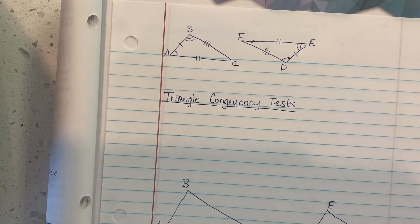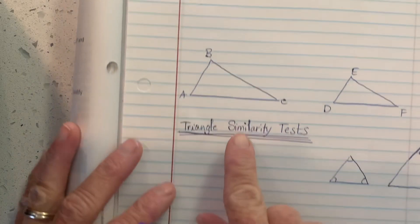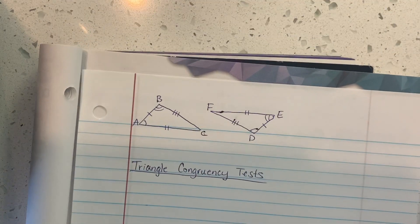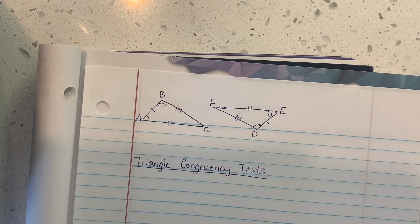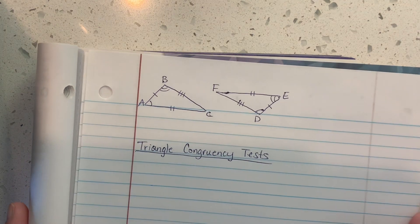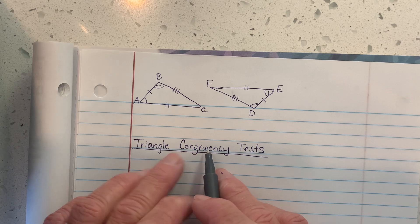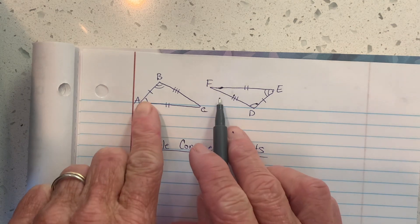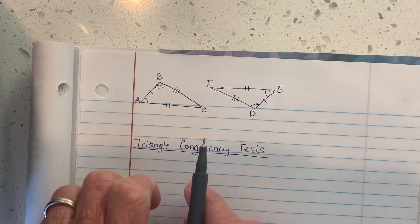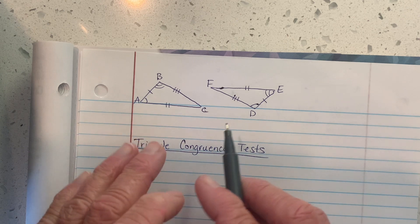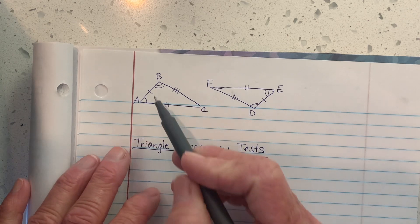Let's explore triangle similarity tests, but prior to that I just want to remind you what we already know from our study on congruent triangles a few modules ago. In order for triangles to be congruent, they have to be the same exact shape and size, and all of the parts that correspond must be congruent.